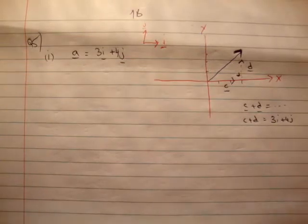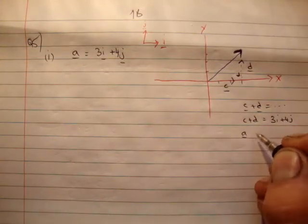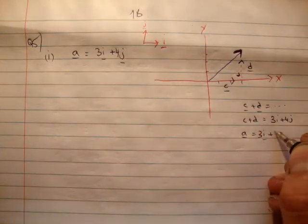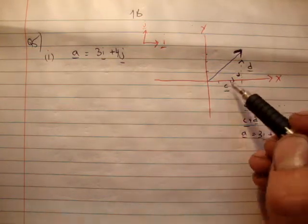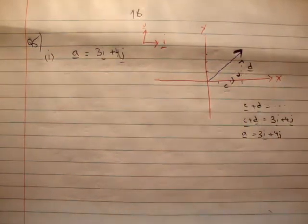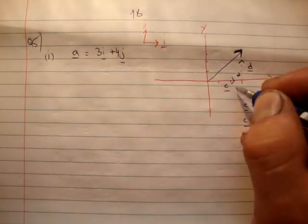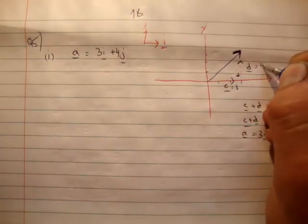Okay, 3i plus 4j, and as I said, a is equal to 3i plus 4j. Alright, so anyway, that's how we do it. I'm just going to give their magnitudes: c is equal to 3, d is equal to 4.